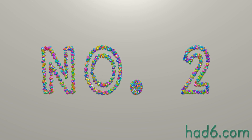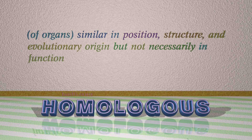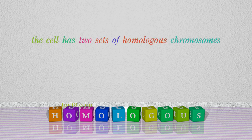Number 2: Homologous, which means of organs similar in position, structure, and evolutionary origin but not necessarily in function. For example: The cell has two sets of homologous chromosomes.